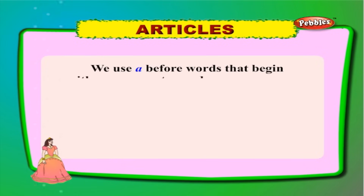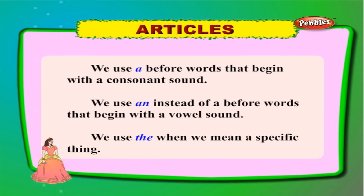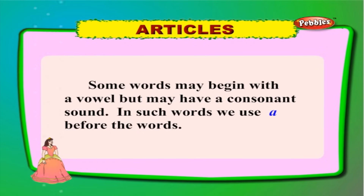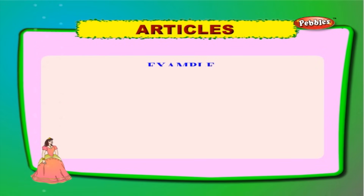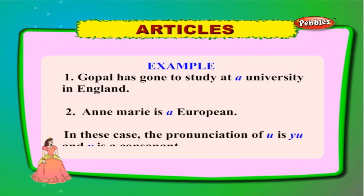Articles: 'a', 'an', and 'the' are called the articles. We use 'a' before words that begin with a consonant sound. We use 'an' instead of 'a' before words that begin with a vowel sound. We use 'the' when we mean a specific thing. Some words may begin with a vowel but have a consonant sound — in such cases we use 'a'. For example: 'Gopal has gone to study at a university in England' and 'Annie Mary is a European' — the pronunciation of 'u' is 'you' and 'y' is a consonant.